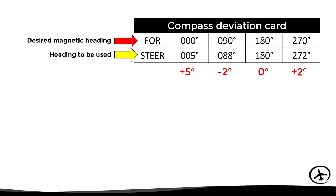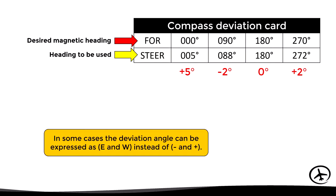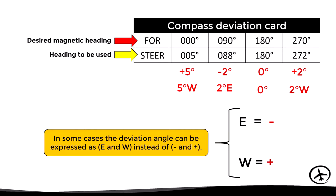Sometimes compass deviation is expressed in terms of east or west instead of plus or minus. Here we apply the same rule as with magnetic variation: east is least and west is best. So in the example, these would be the compass deviations expressed in terms of east and west.